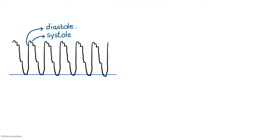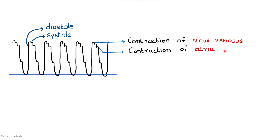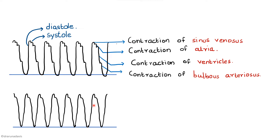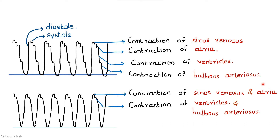The downstroke contains four components — four small waves, each indicating a different chamber of the frog's heart. The first depicts the contraction of the sinus venosus, the second the contraction of the atria, then the ventricles, and finally the bulbus arteriosus. This is an ideal cardiogram, but the actually obtained graph has just two waves: the first for sinus venosus and atria combined, and the second for ventricles and bulbus arteriosus combined. So we draw the graph with two components, starting with the systolic component and ending with the diastolic component.